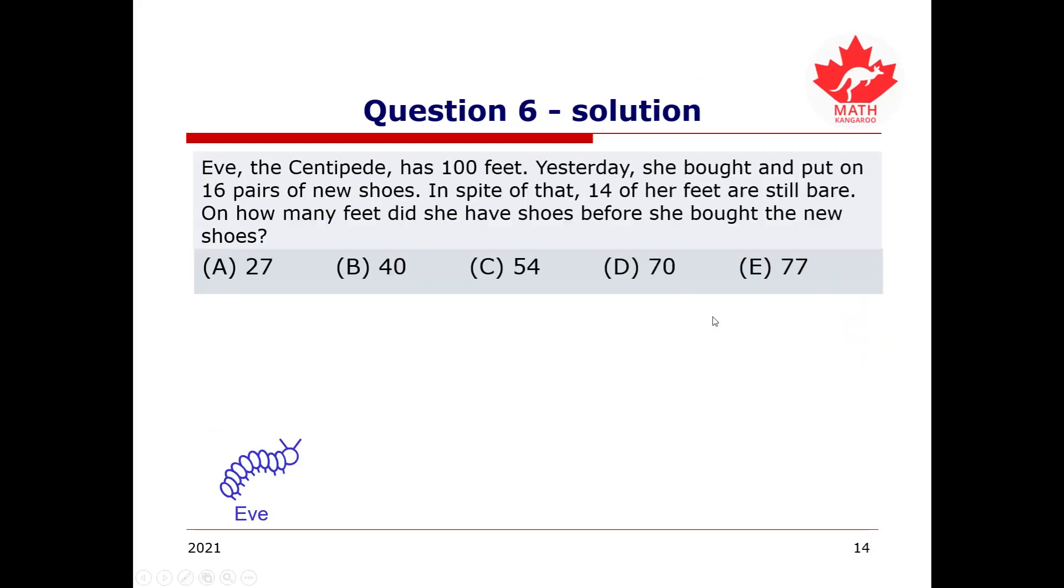So, to solve this problem, let us work backwards. First, we know that Eve has 100 feet. So, since she still has 14 bare feet even after she put on some new shoes, we can go 100 minus 14, which is 86. This means that Eve has 86 feet with shoes on, including the 16 pairs of new shoes that Eve bought yesterday.